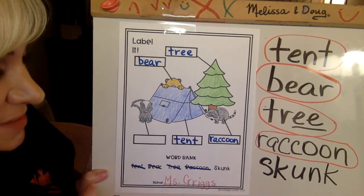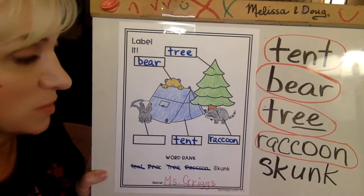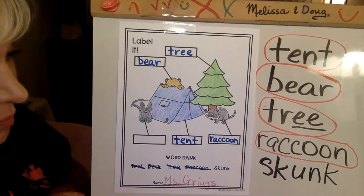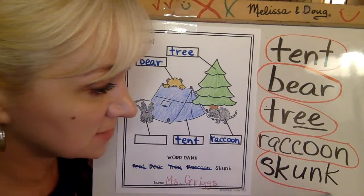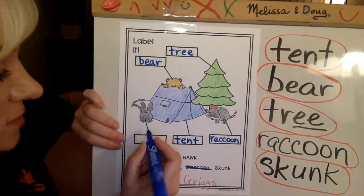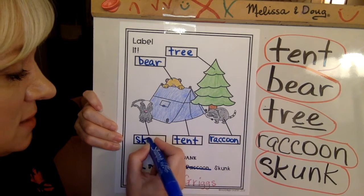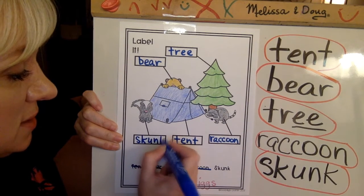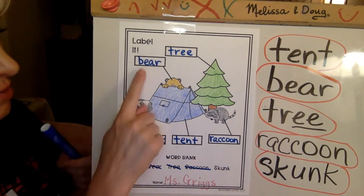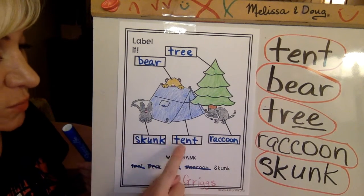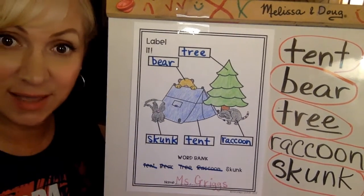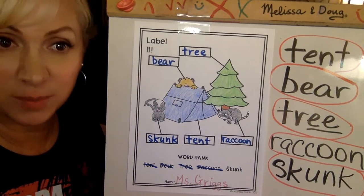And my very last one — hopefully if I did everything correctly — should be that little guy, a skunk. I hope you agree that that is definitely a skunk. We can tell because he has the big white stripe down the back. S-K-U-N-K. Very good. And there I have labeled all my pictures: bear, tree, raccoon, tent, skunk. And that is our camping labeling activity. Thank you for helping me.